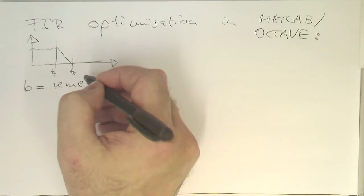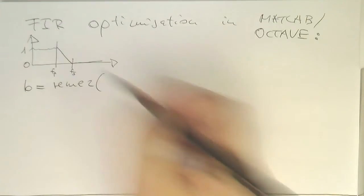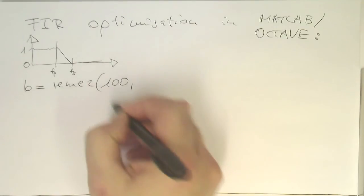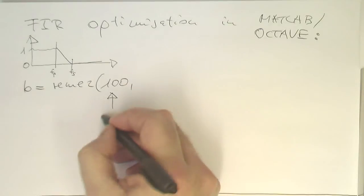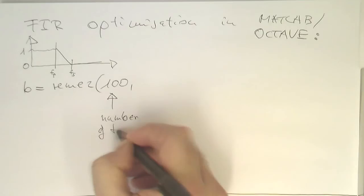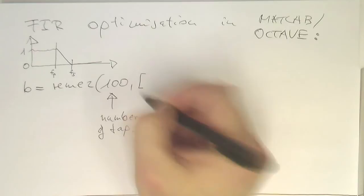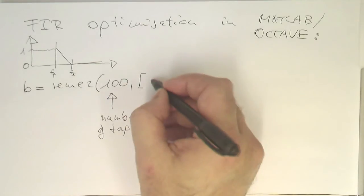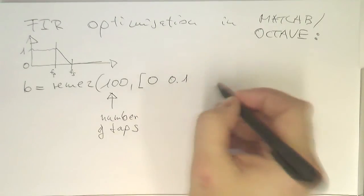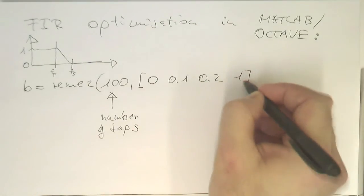This gives us here again our F-pass band, and this is our F-stop band here. Then we are defining amplitudes here, for example, a 1 here and a 0 here. And that's the same idea. We do this here. 100 gives us the number of taps. And then the next array gives us the frequency points. Let's say here 0, 0.1, 0.2, and 1.